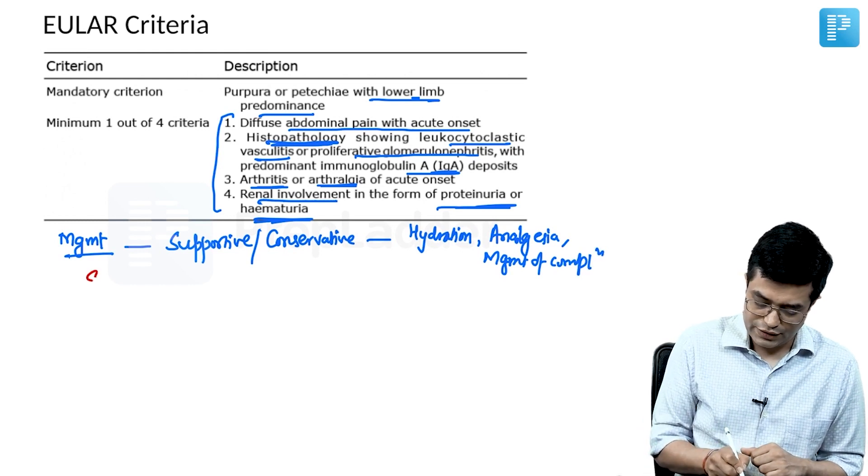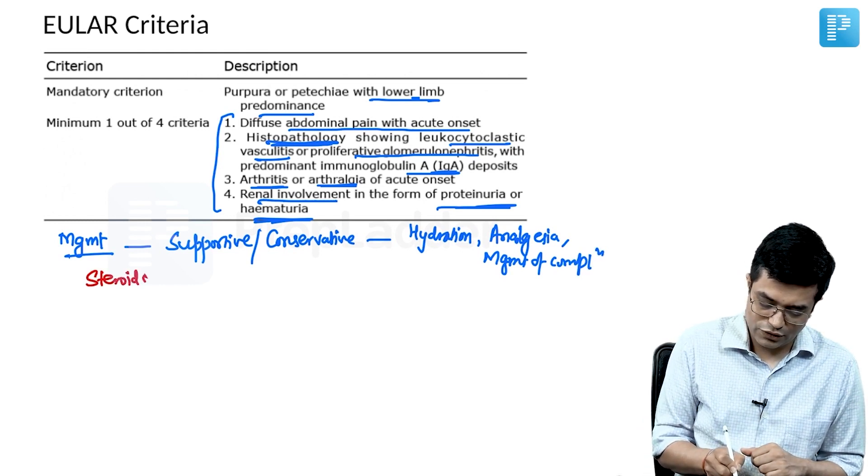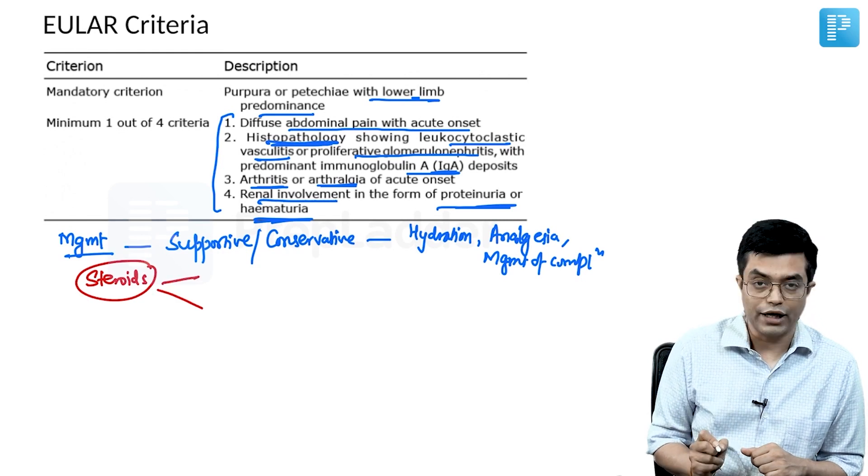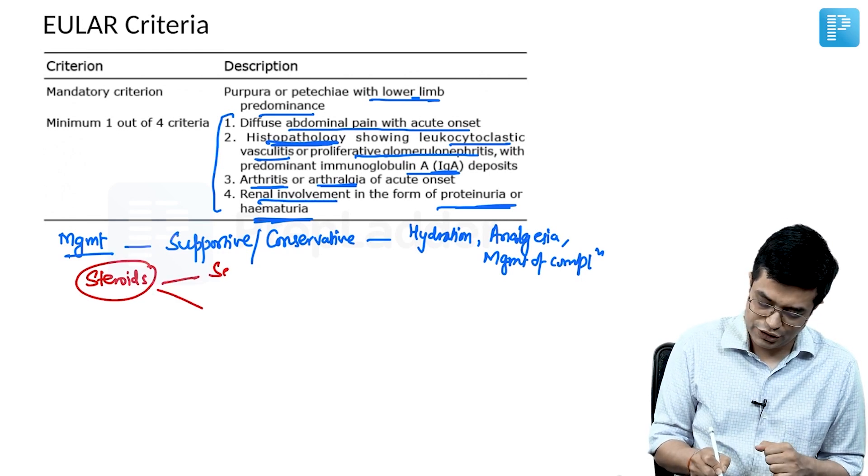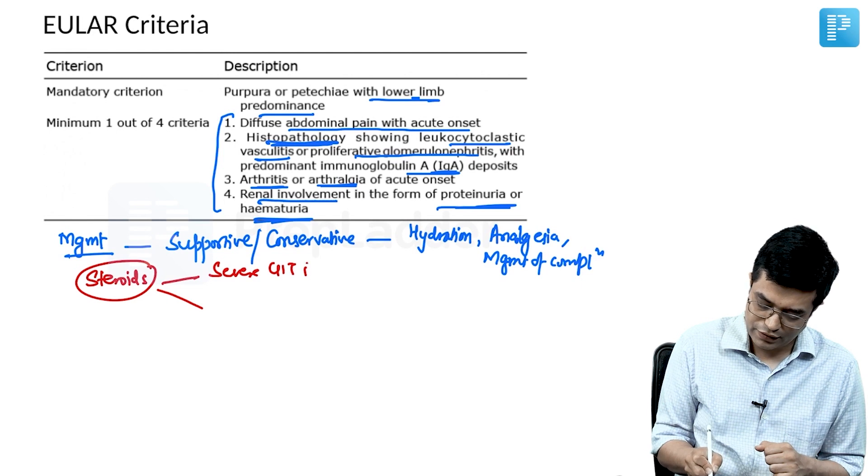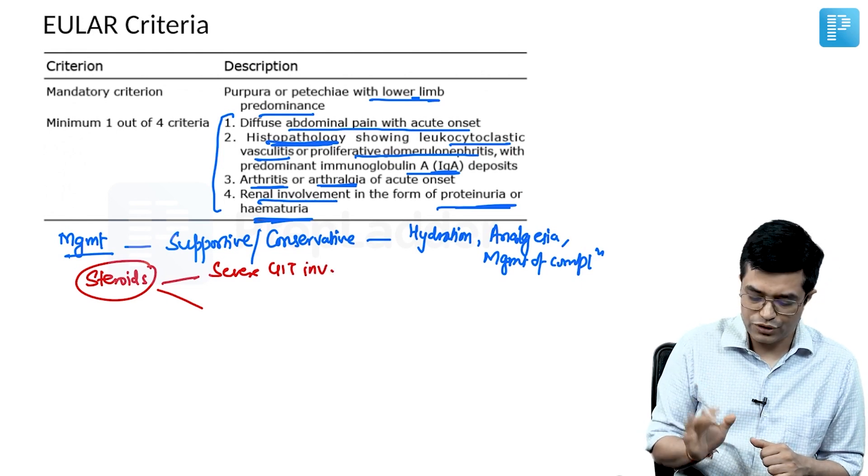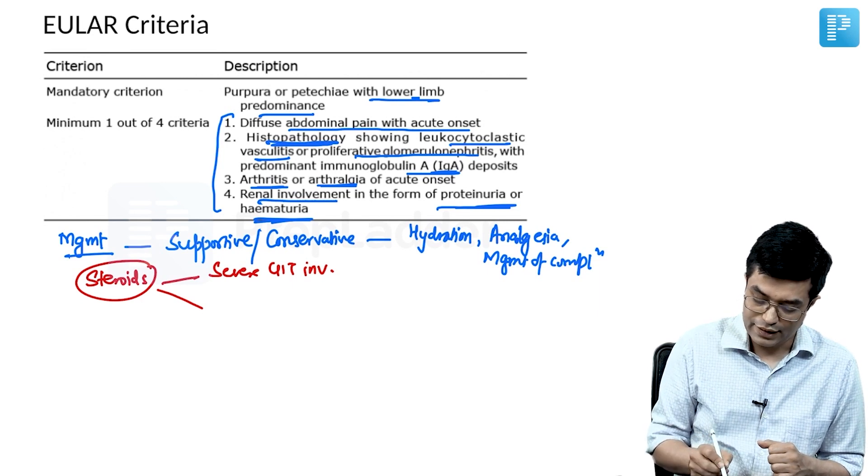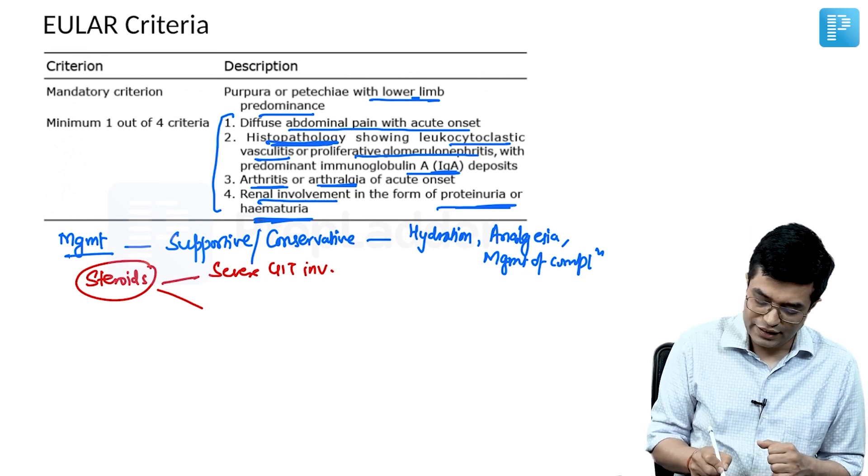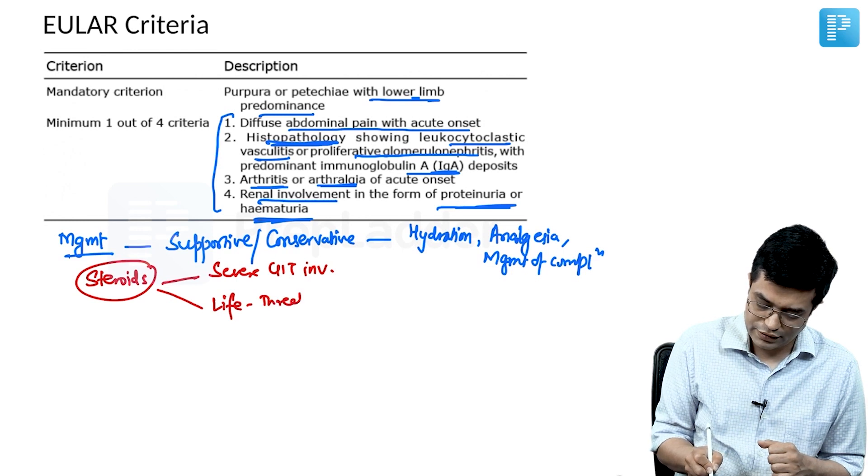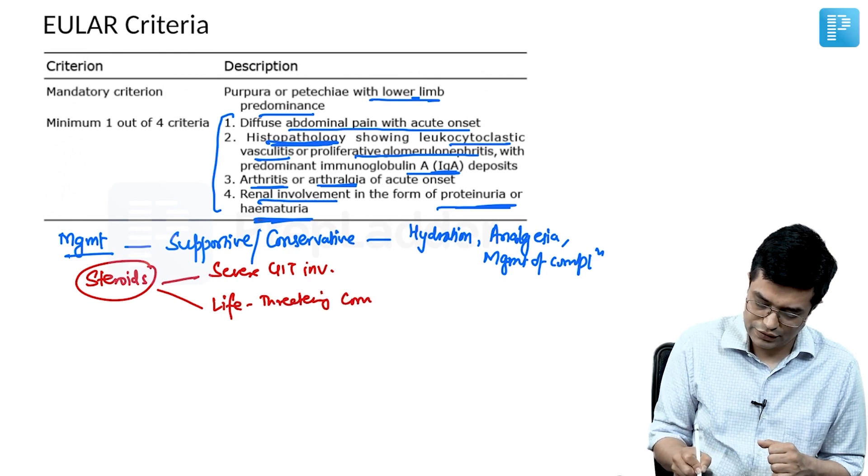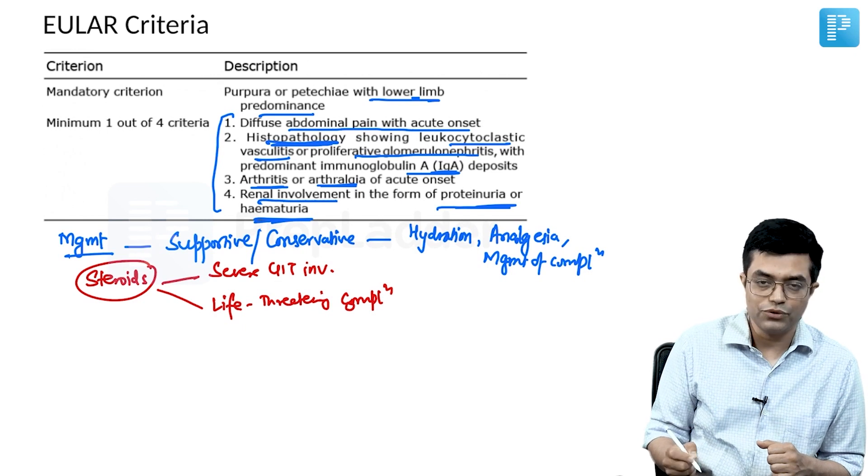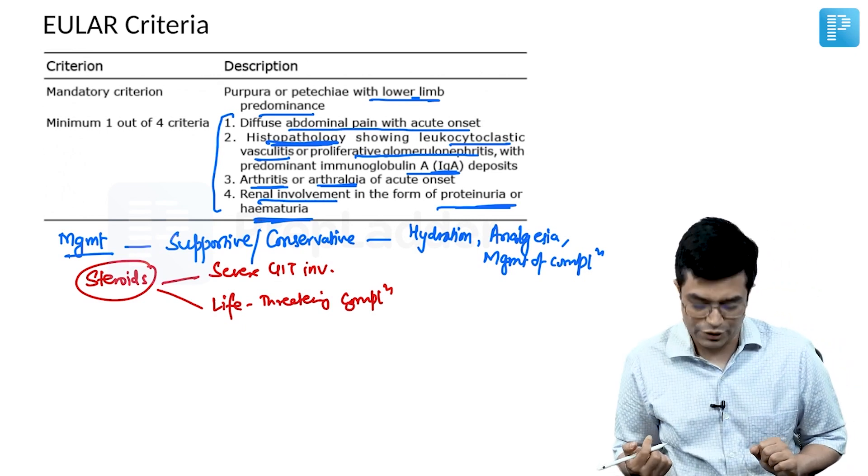What is the role of steroids? Short course of steroids or prednisolone is indicated in two scenarios: in case there is severe GI involvement, sometimes only GI involvement is mentioned. This child does not have any GI involvement if you look at the case. And secondly, it will be indicated in any life-threatening situations or life-threatening complications. Giving steroid does not reduce the risk of developing nephritis in a patient.